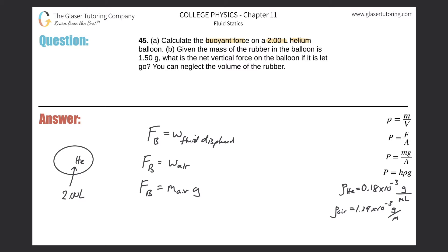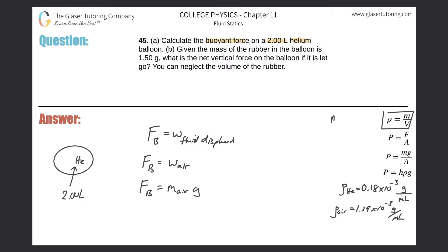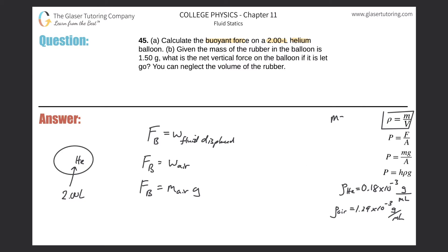All I know is the volume, and you should also know the density of air — given in grams per milliliter. If I solve weight for mass, mass equals density times volume. So I can substitute that into the weight equation: the buoyant force equals the density of the air multiplied by the volume of the air displaced multiplied by gravity.